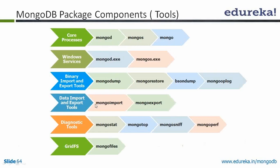We will use all tools mentioned here in upcoming sessions. Just keep in mind: under core processes, three processes come — mongod, mongos, and mongo. Mongod is mainly responsible for database activities, mongos is the query router used for sharding, and mongo is the Mongo shell, which is a client. At the initial stage, we will use only these two: mongod as a database and mongo as a client.